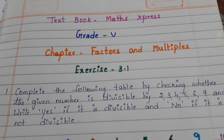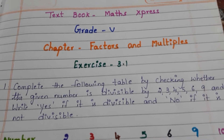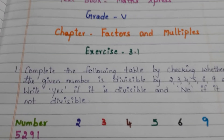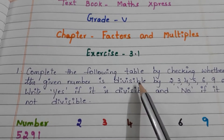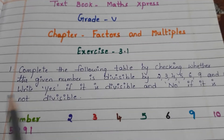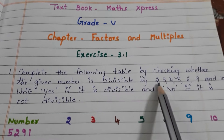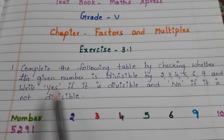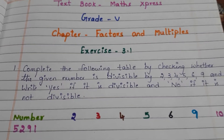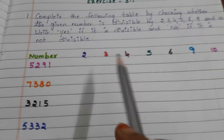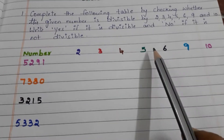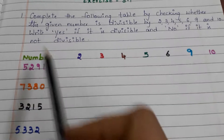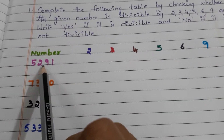Now let us go to the exercise. Let us read the question first: complete the following table by checking whether the given number is divisible by 2, 3, 4, 5, 6, 9, and 10. Write yes if it is divisible and no if it is not divisible. We have to check each number for divisibility by 2, 3, 4, 5, 6, 9, and 10. The first number is 5291.